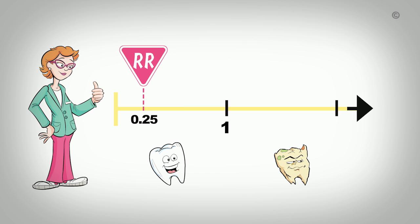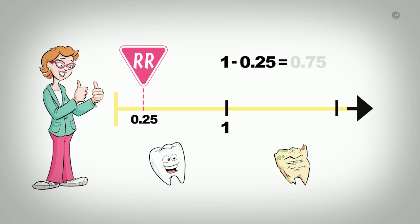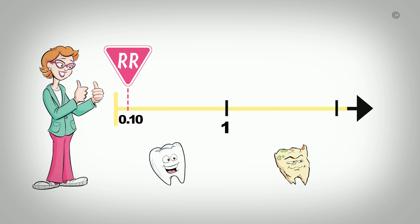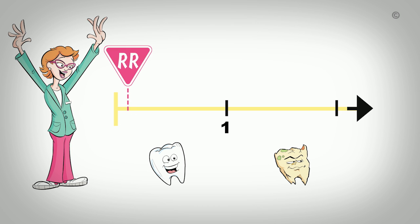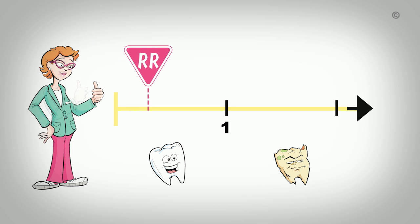If the RR had been 0.25, we would say that the risk for developing dental caries in children receiving the education was 75% less than that of children not receiving the education. We arrive at this number by subtracting the RR, 0.25, from 1: 1 minus 0.25 equals 0.75 or 75%. If the RR was 0.10, we would subtract that from 1, giving us 0.90, meaning children receiving the education had a 90% lower risk. The farther away from 1 the RR is, the lower the risk of dental caries and the more effective the intervention.